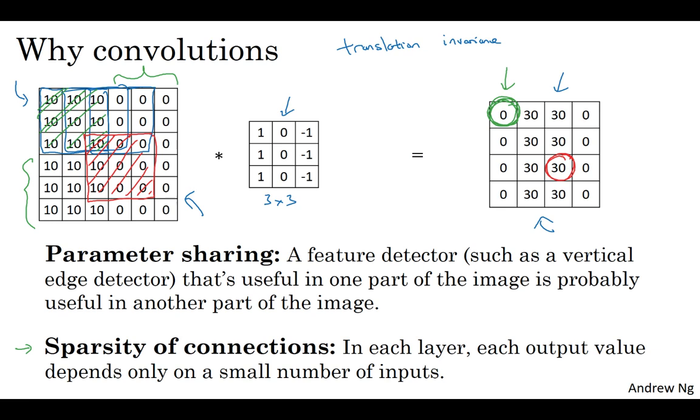And the fact that you're applying the same filter in all the positions of the image, both in the earlier layers and in the later layers. That helps a neural network automatically learn to be more robust or to capture, to better capture this desirable property of translation invariance.